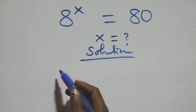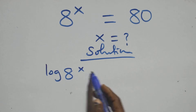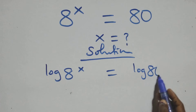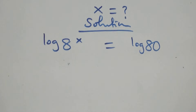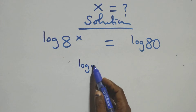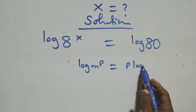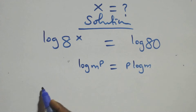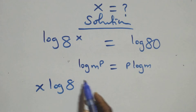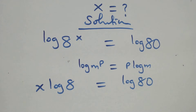What we have here, we take the log on both sides. We have log of x raised to power x equals to log 80. We apply the power rule of logarithm: log m raised to power p is the same as p·log m. So we have x·log 8 equals to log 80.